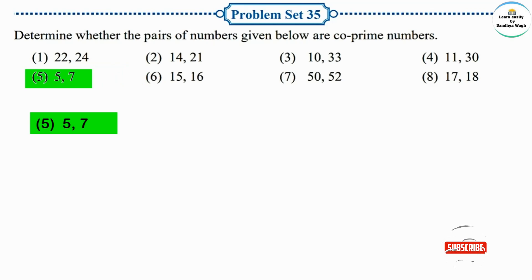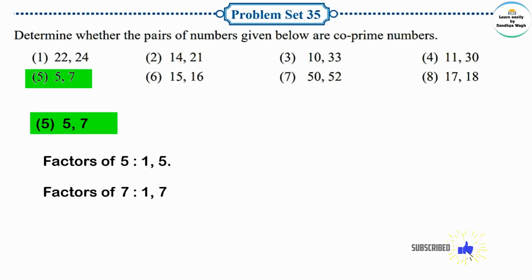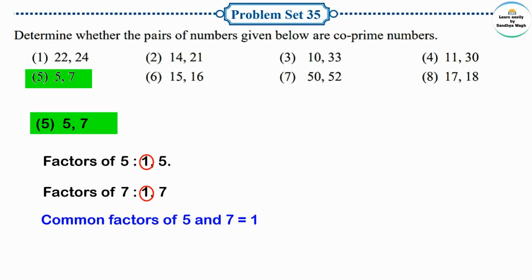Next pair: 5 and 7. Factors of 5: 1 and 5. Factors of 7: 1 and 7. When the factors are 1 and the number itself, those numbers are prime numbers. Here 5 and 7 are both prime numbers. The common factor of 5 and 7 is just 1. Therefore, 5 and 7 are co-prime numbers.